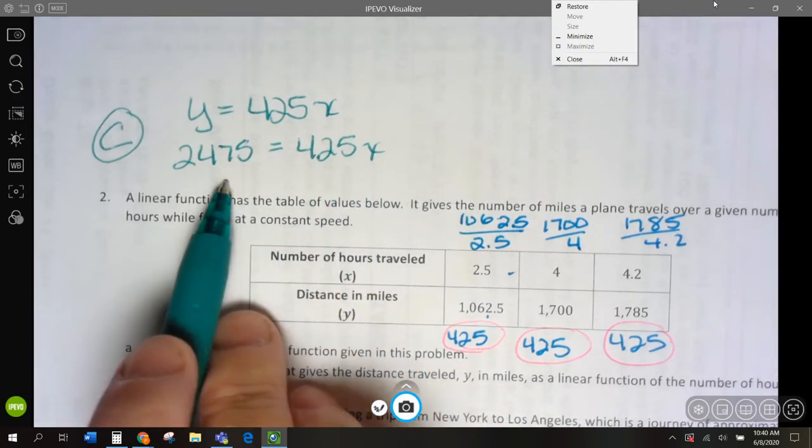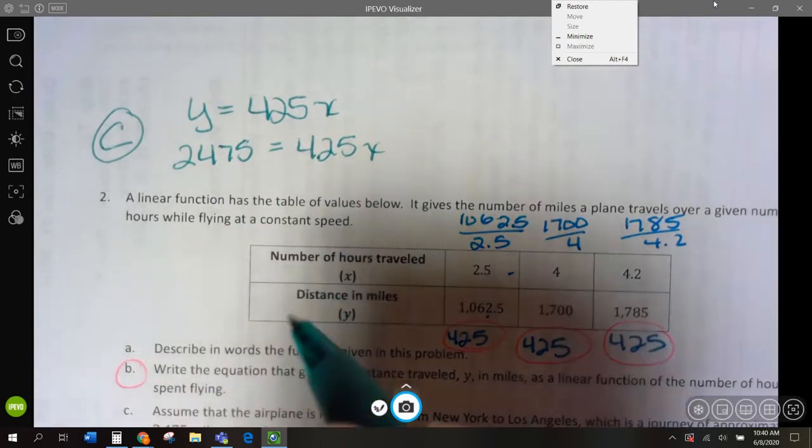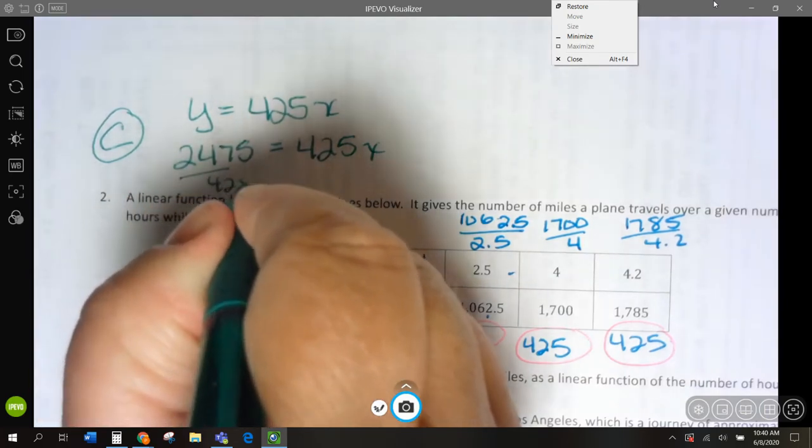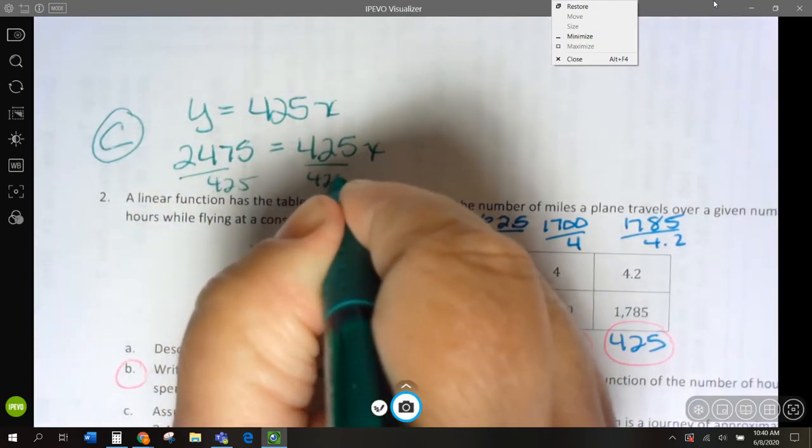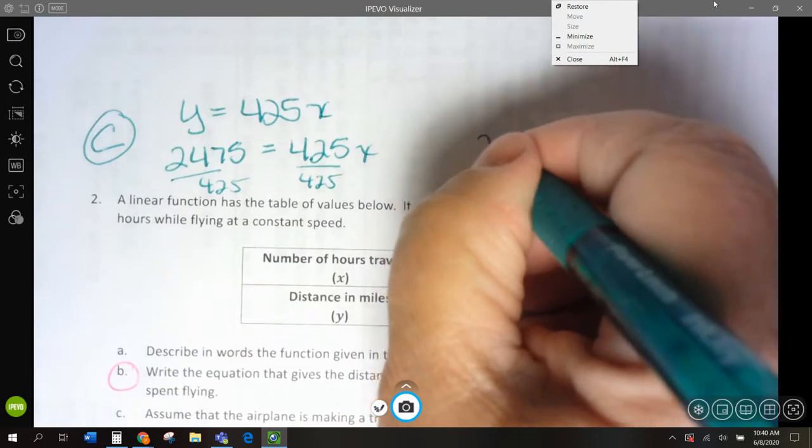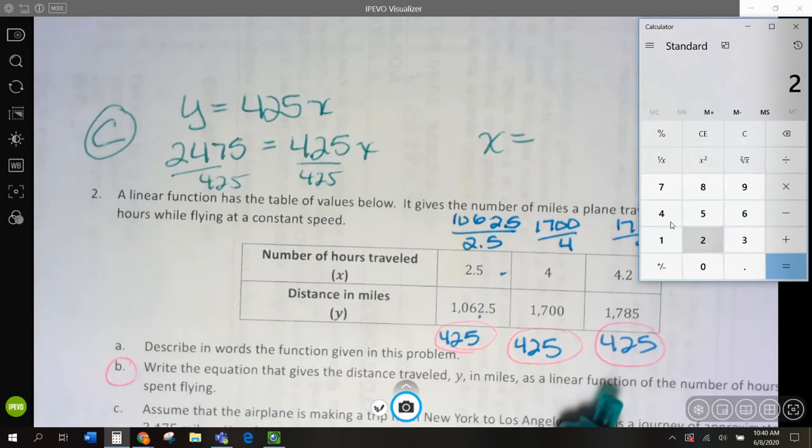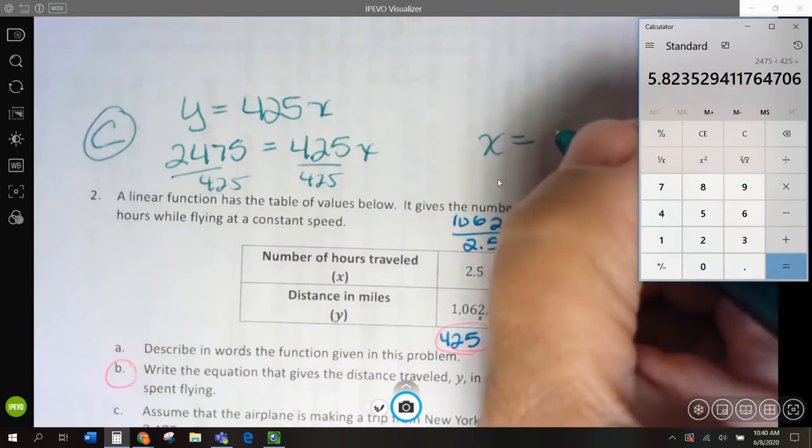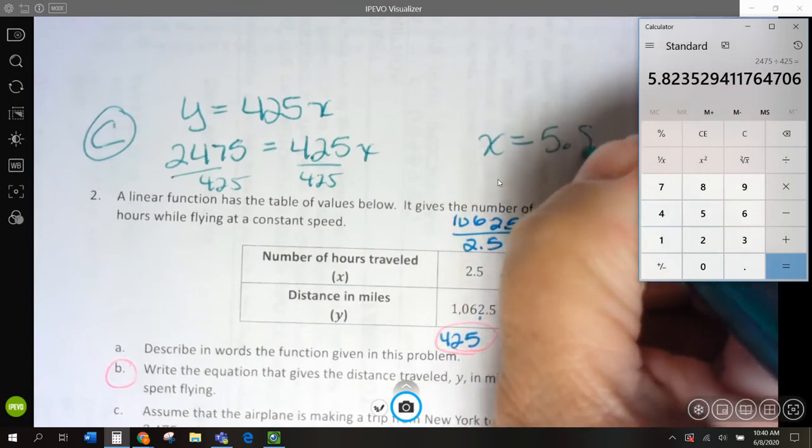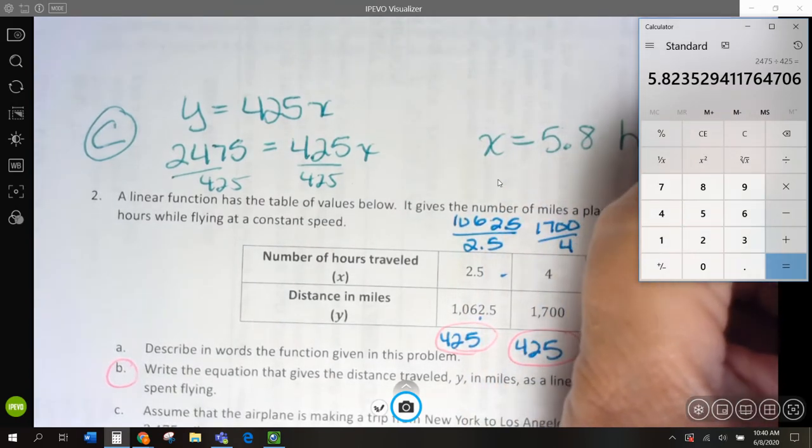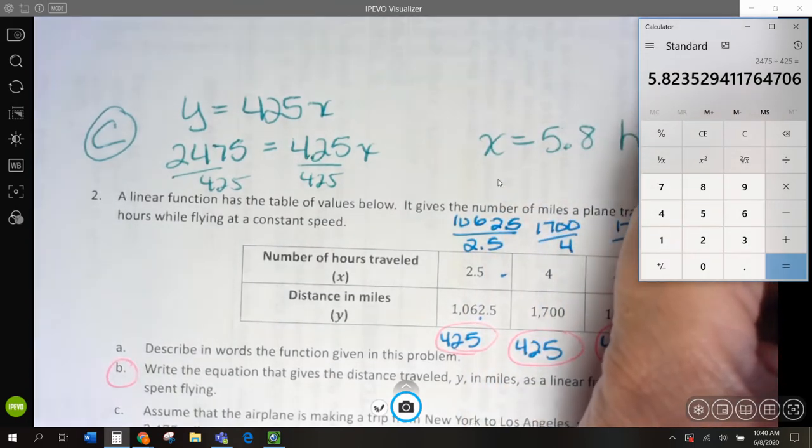To solve for x, we divide by 425, and x, let me see over here, let's do 2,475 divided by 425, 5.8 hours? About 5.8 hours.